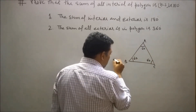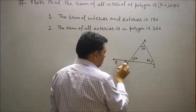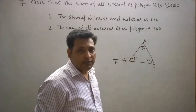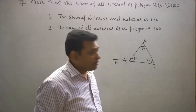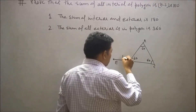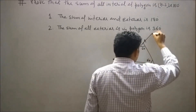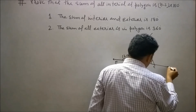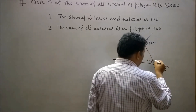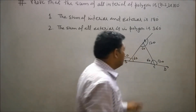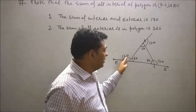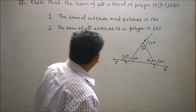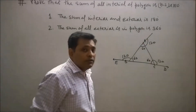Now if we produce DC to point E, then angle EBA will be an exterior angle. The sum of the interior and exterior angle is always 180 degrees because these angles are a linear pair. So this exterior angle will be 120 degrees. Similarly, the other exterior angles will also be 120 degrees each. So the sum of all exterior angles is 120 + 120 + 120 = 360 degrees.